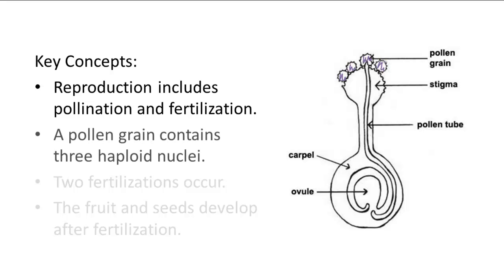Each pollen grain contains three haploid nuclei, two of which are sperm nuclei and one of which is called a tube nucleus. One of the pollen grains on the stigma will germinate under the right conditions by absorbing the moisture of the stigma. During germination, the tube nucleus will begin to burrow a tube through the stigma and the style, connecting down through the ovary into the ovule. This tube is called the pollen tube, and it allows the other two sperm nuclei to safely travel down the style and into the ovule.